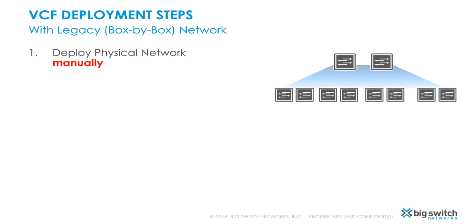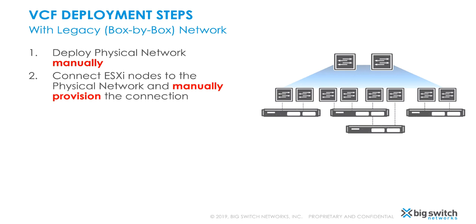Let's see how VMware Cloud Foundation is deployed on a legacy box-by-box network. First, the physical network needs to be manually deployed while loading the correct software version and appropriate configuration on each box. Next, the ESXi nodes need to be connected to the physical fabric. Both numbers need to be noted down and configured manually with appropriate configurations. Cloud Builder VM needs to be deployed and a configuration spreadsheet needs to be uploaded to the VM to get ready for the deployment.